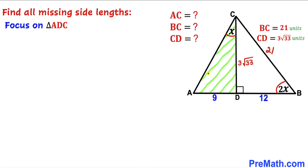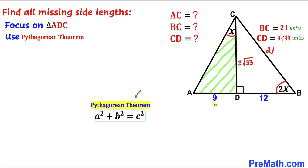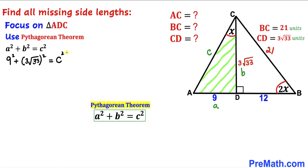Now for the final step, let's focus on right triangle ADC. We know its two side lengths: AD is 9 and CD is 3 times square root of 33. We are going to calculate side length AC using the Pythagorean theorem once again: A squared plus B squared equals C squared. A is 9, B is 3 times square root of 33, and we need to find C squared.